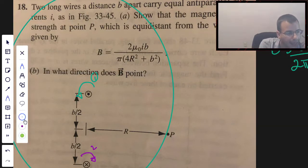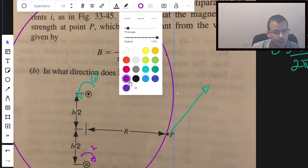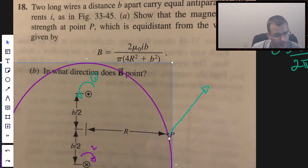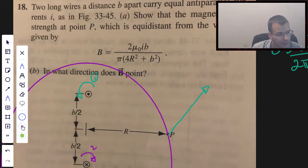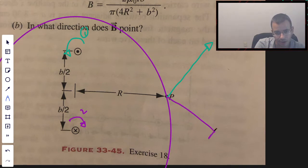This is for the top one. We can tell we've determined already, right-hand rule, current's coming out, wrap your fingers counterclockwise. So this is going to create a magnetic field going up and to the right.